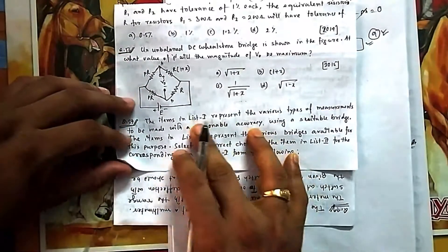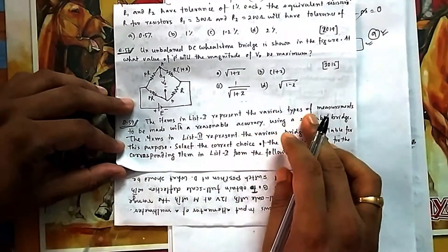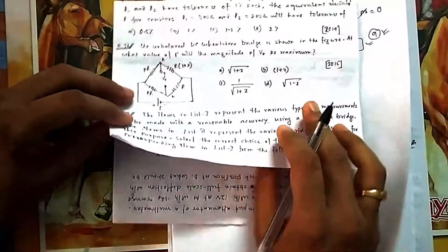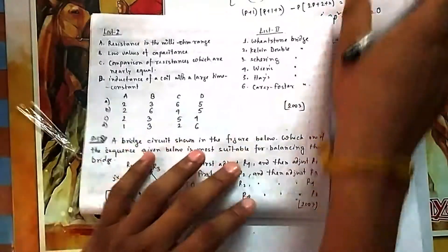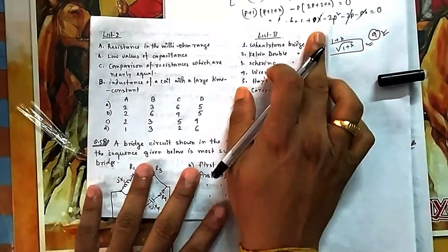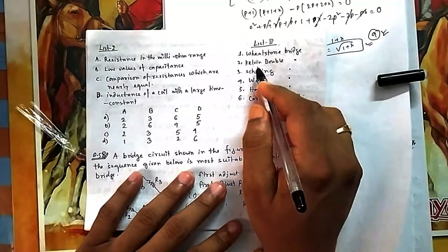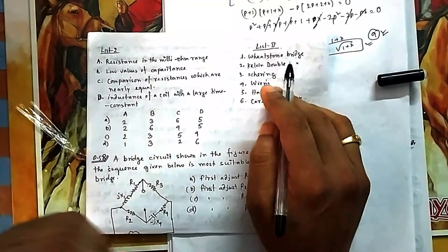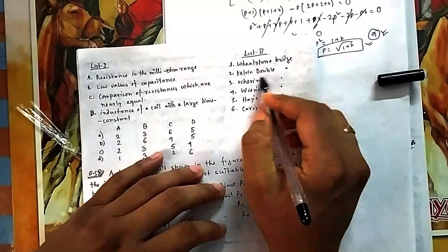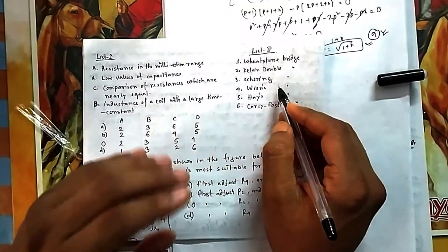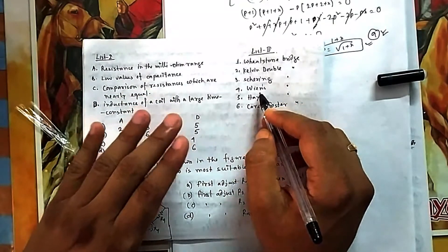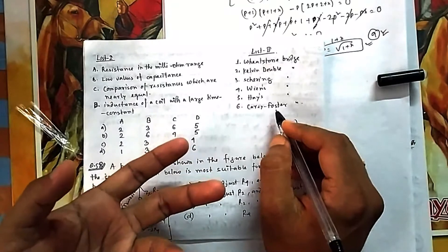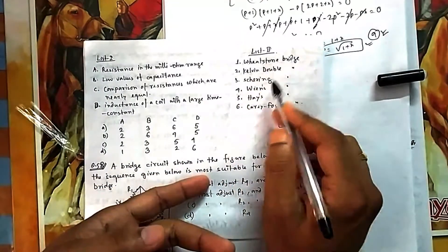Question 57 involves matching List 1 items to List 2 bridge types for various measurements. Key bridge types to know: Wheatstone bridge for normal resistance, Kelvin double bridge for very low resistance (so lead wire resistance is nullified), Schering bridge for capacitance, Wien bridge for frequency measurement, Hay bridge for inductance, and Carey Foster bridge for resistances.